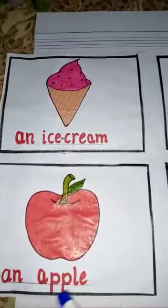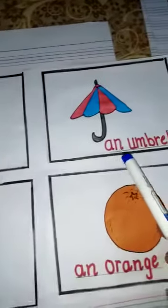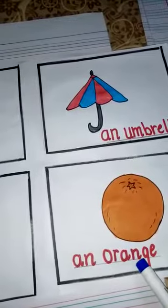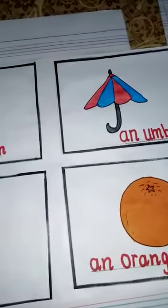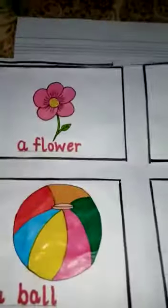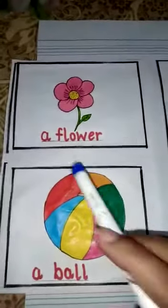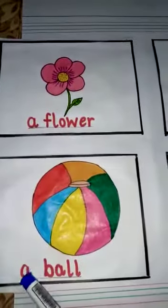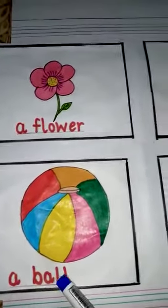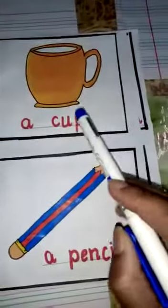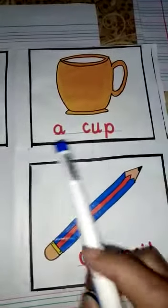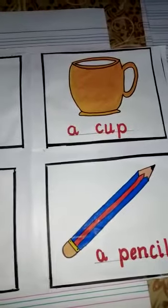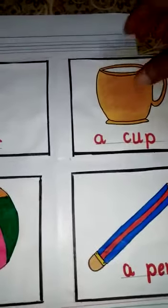Let's see examples of 'a': a flower, a ball, a cup, a pencil. This is how we use 'a' and 'an'.